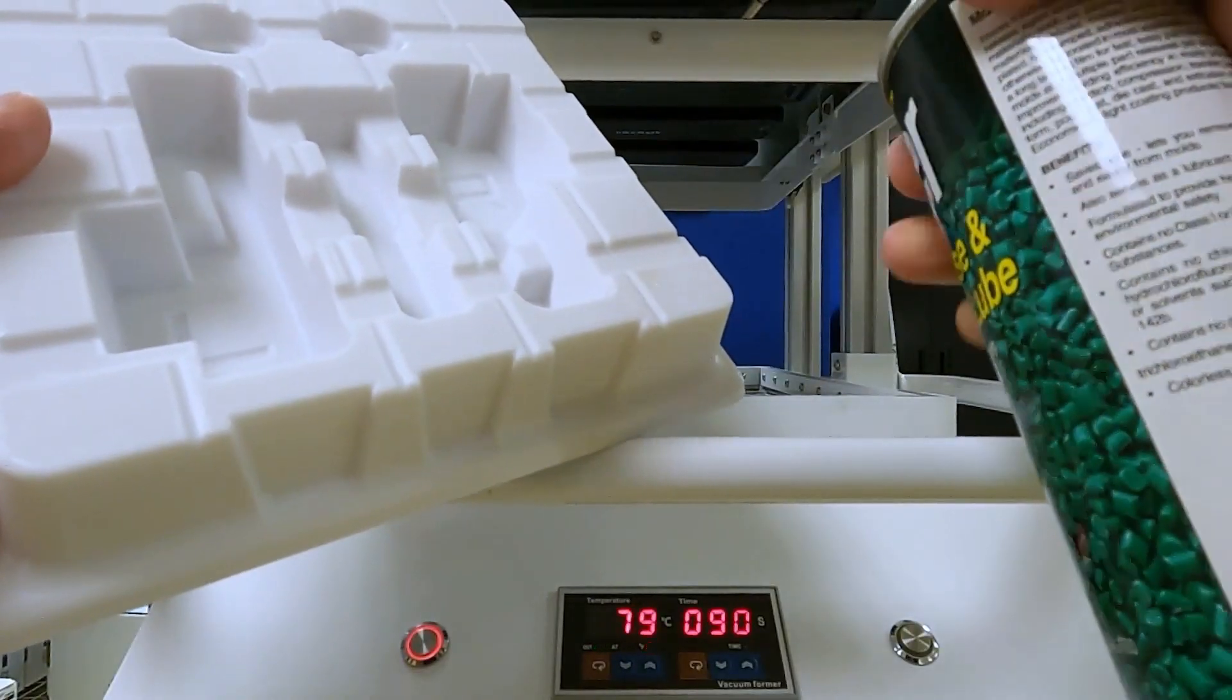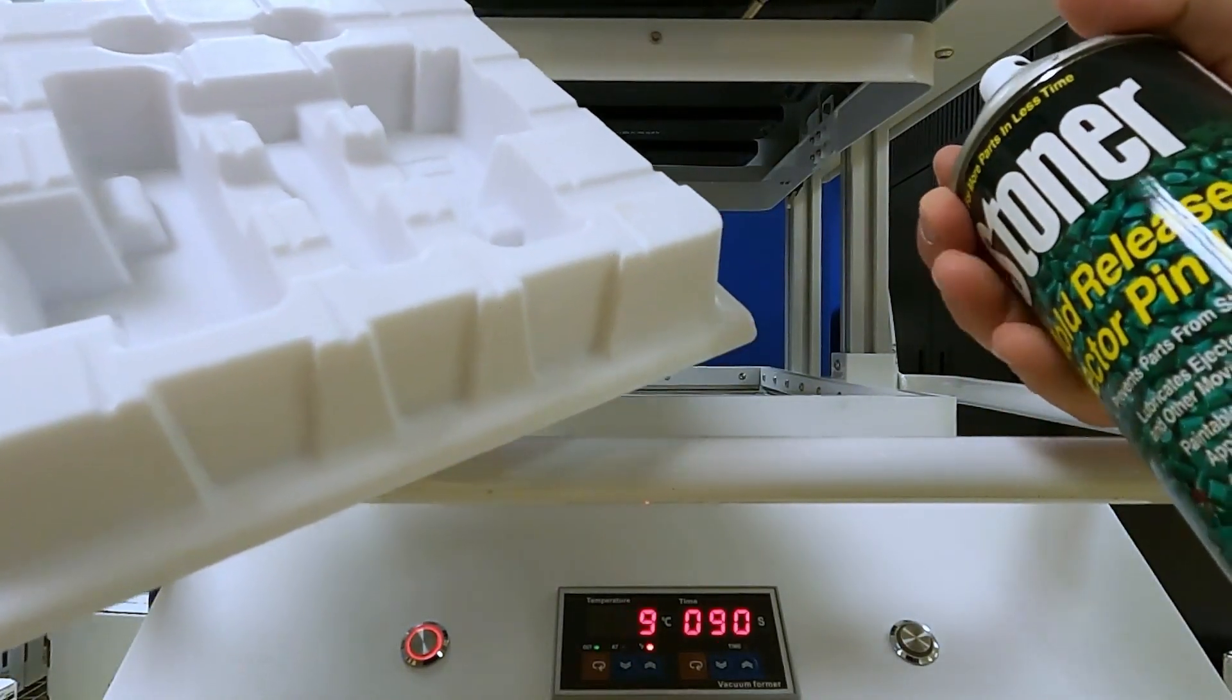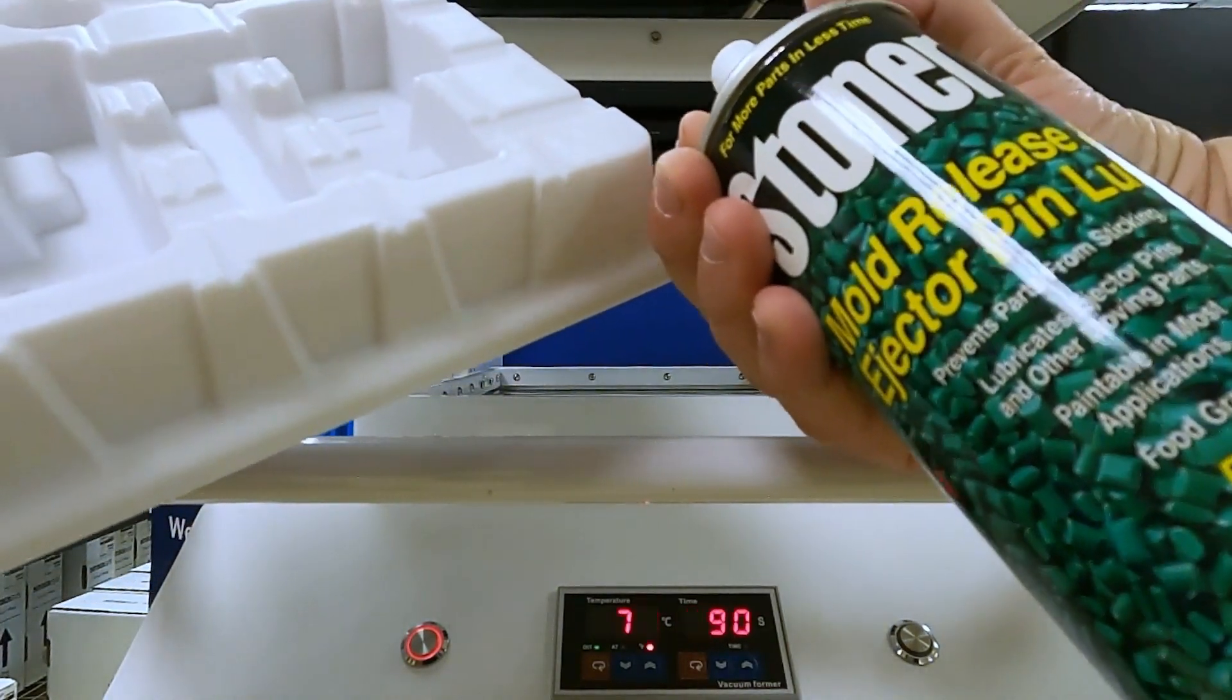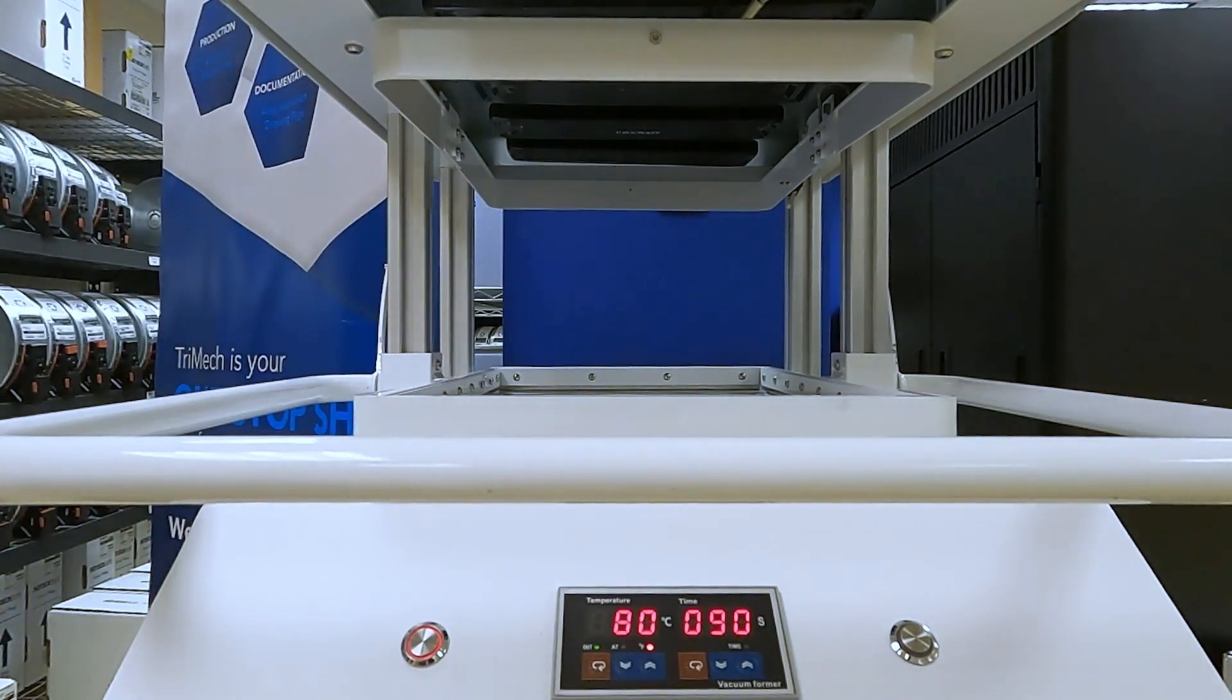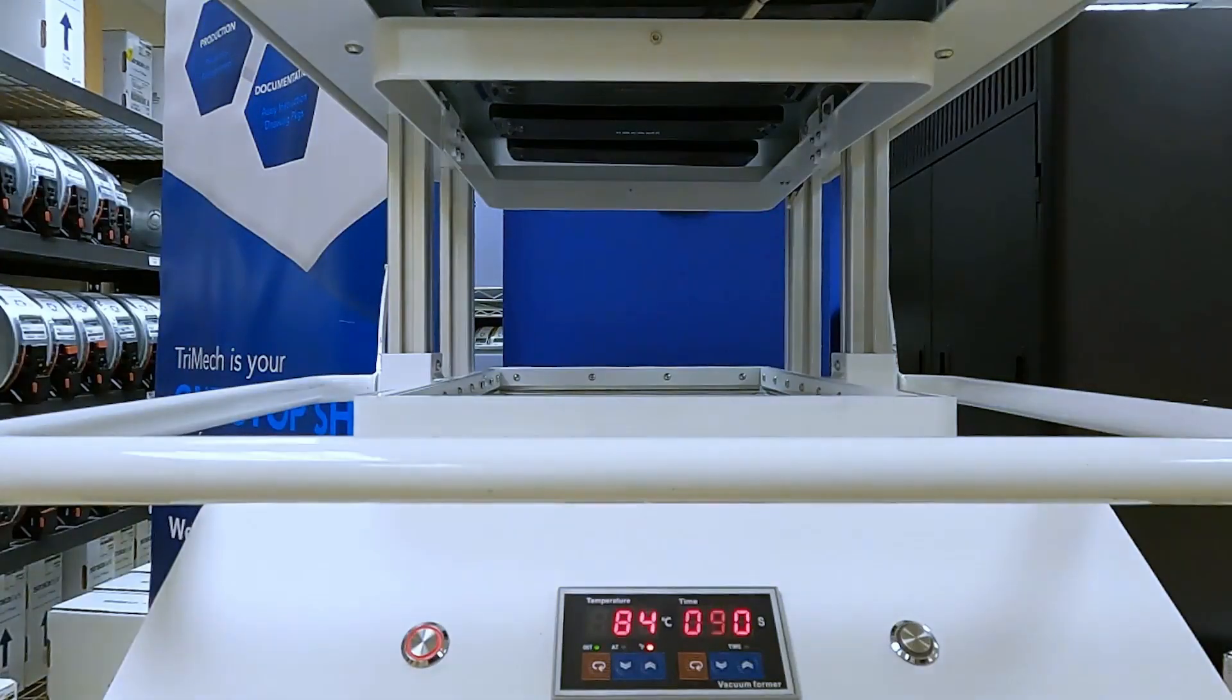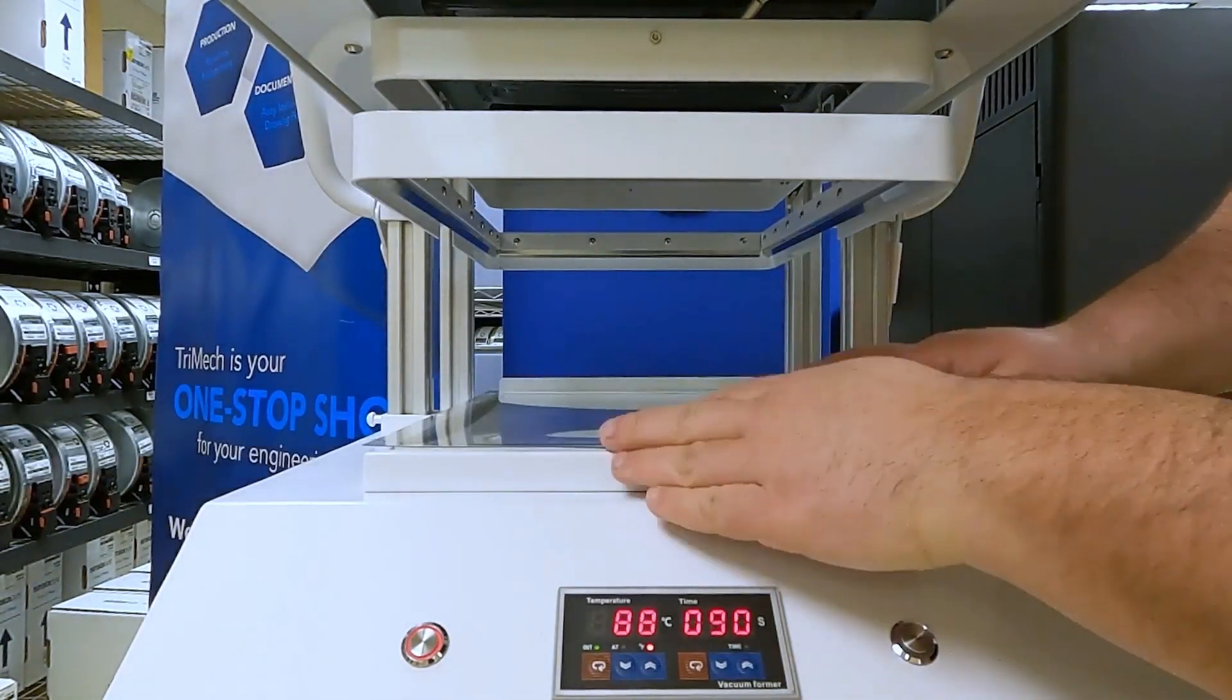We're just going to use a little bit of mold release on this mold to make sure that the plastic sheet releases nicely from the mold itself. I had it happen in some of our test runs where if the draft angles aren't great or the part is too tall, sometimes the thermoform sheet has a hard time releasing, so we just want to make that process as easy as possible.